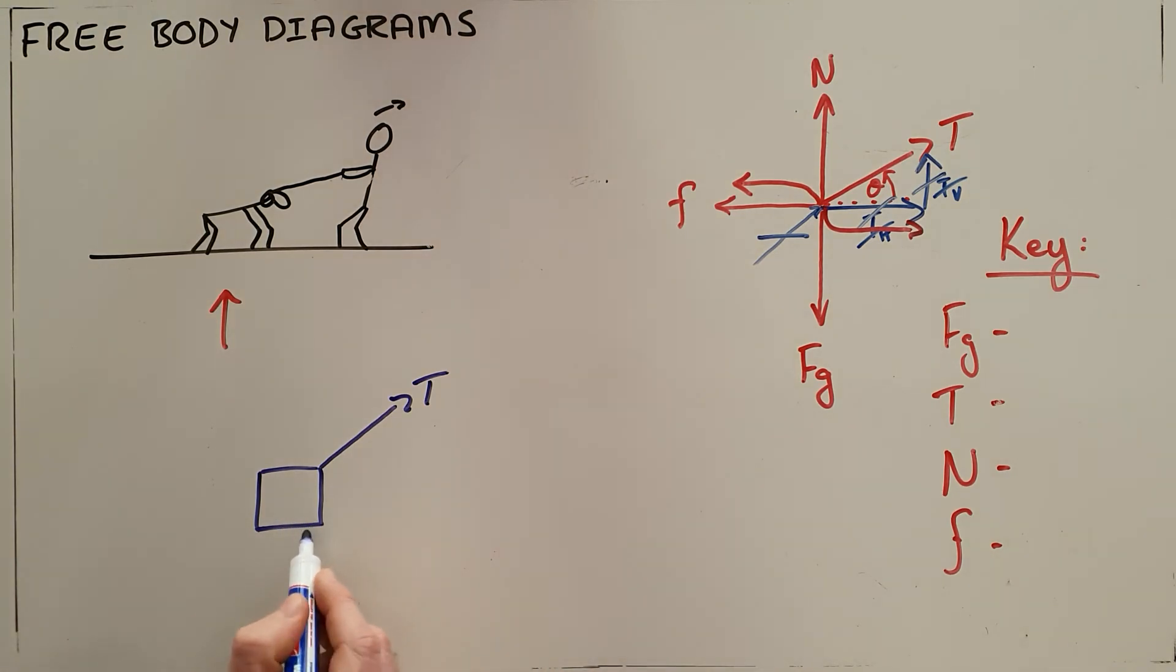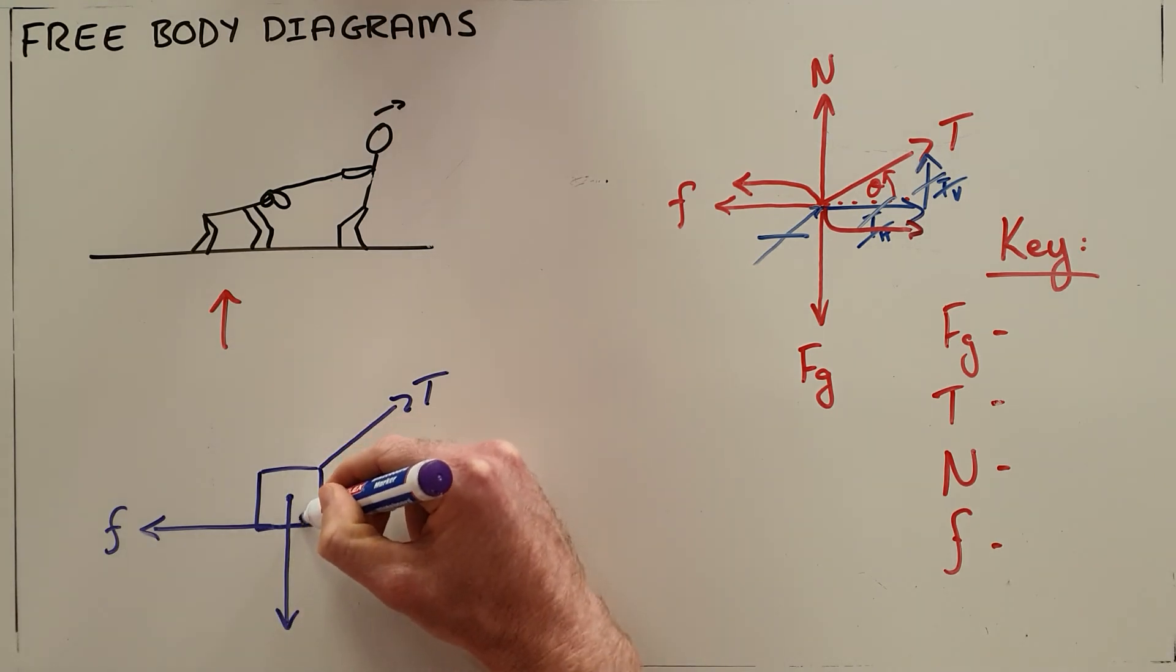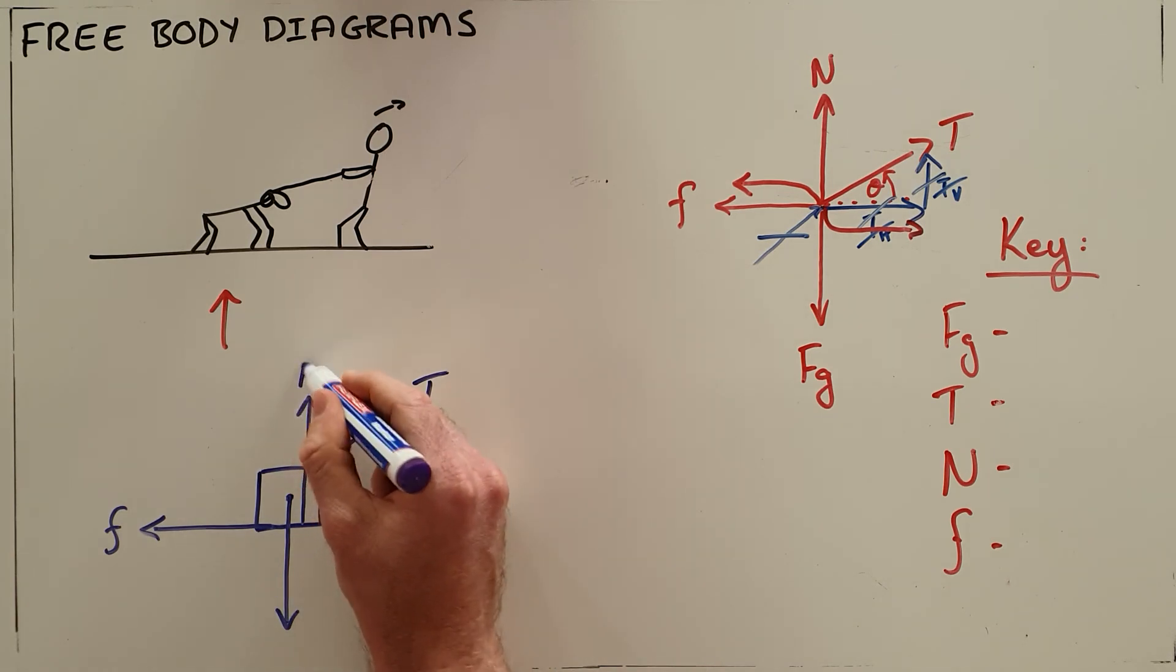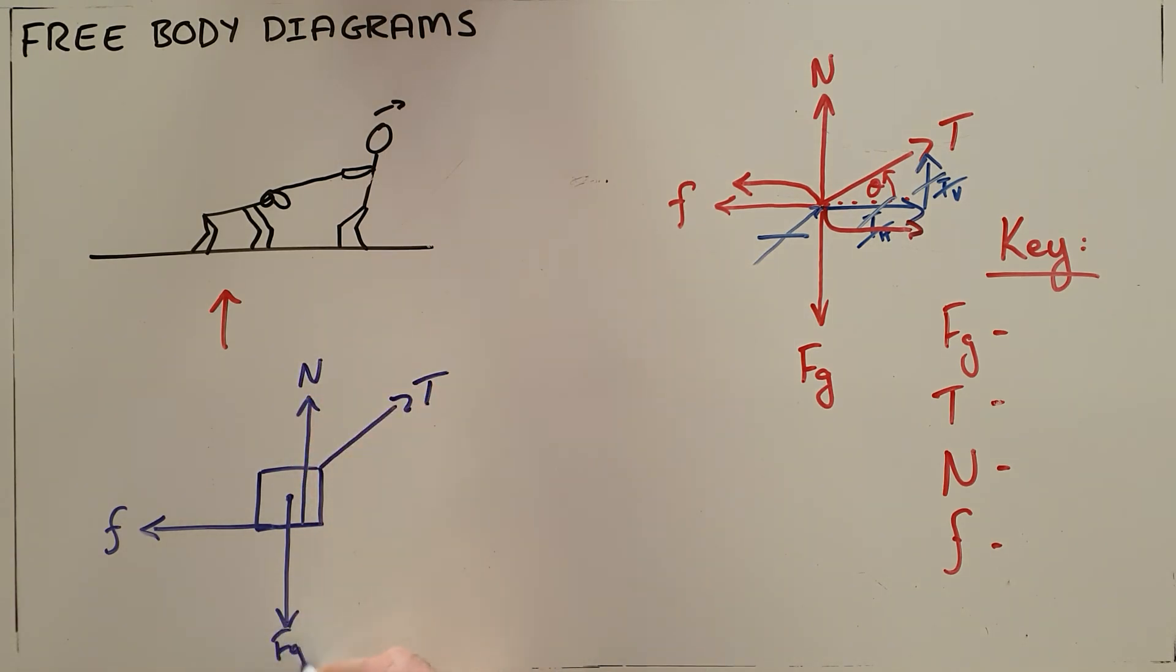The difference now is that we know the frictional force acts along the bottom surface of this object. We know that the force of gravity acts from the center of mass of that object and the normal force also acts on the bottom surface. So you would label this object—this is a force vector diagram. Again, a key is important, but what we are showing here is where the forces act as well as the direction in which those forces act.